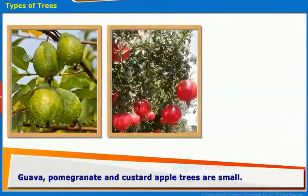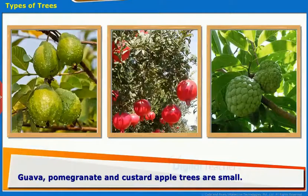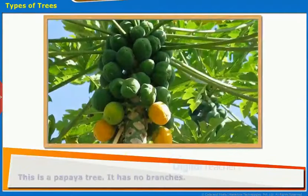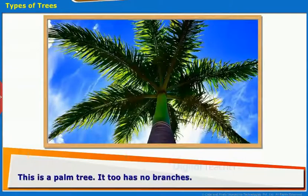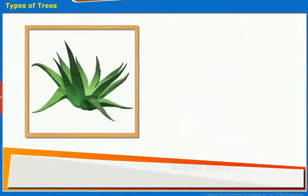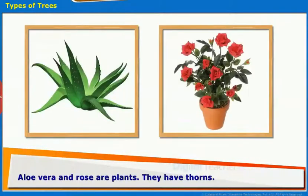Guava, pomegranate, and custard apple trees are small. The papaya tree has no branches. The palm tree also has no branches. Aloe vera and rose are plants that have thorns.